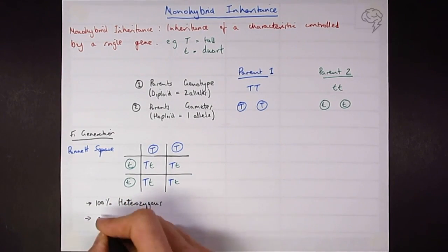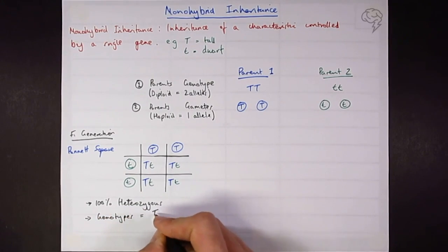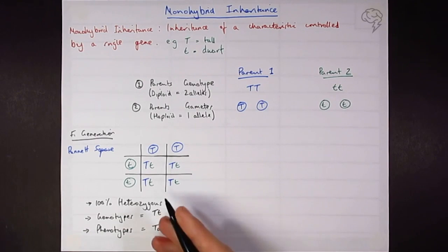What else can we say? We need to know what the genotypes are. Well, these are all going to be heterozygous. And the phenotypes are all going to be tall. That's it. So this isn't very interesting.